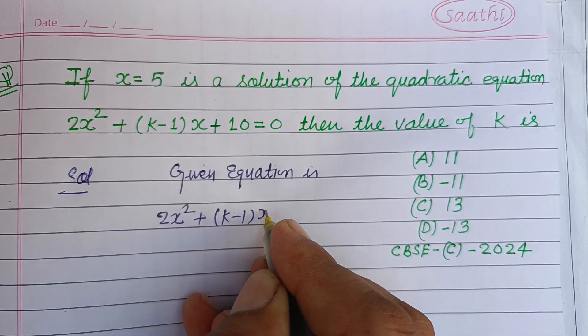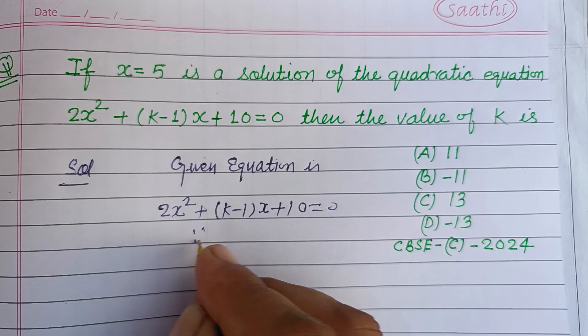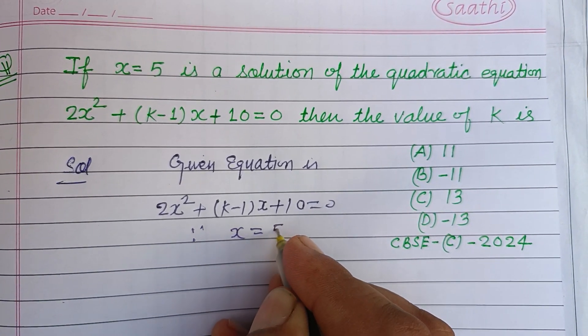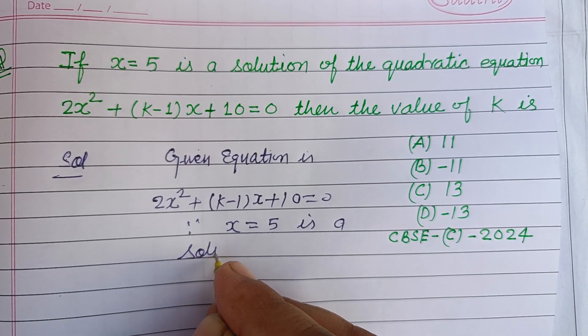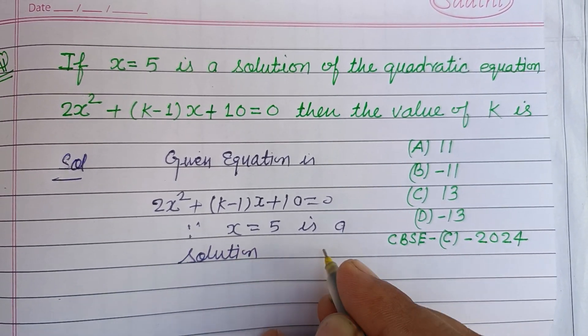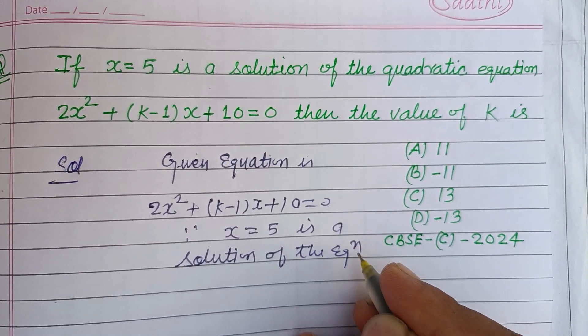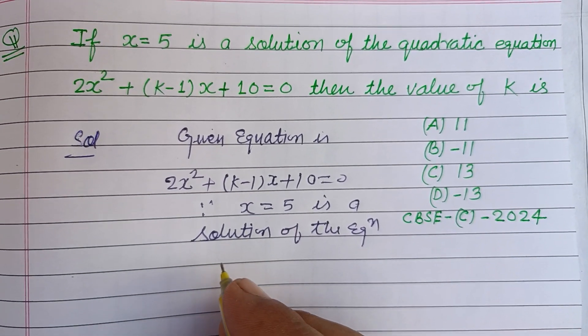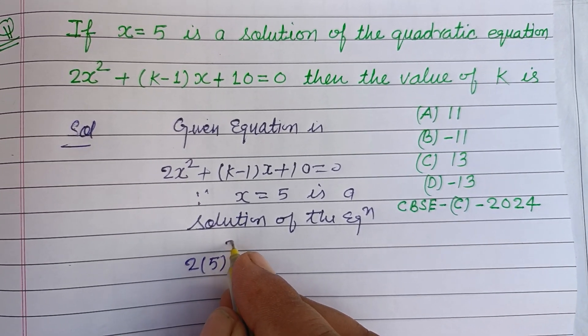Since x equals 5 is a solution of the equation, then putting value x equals 5 in this: 2(5)² + (k-1)(5) + 10 = 0.